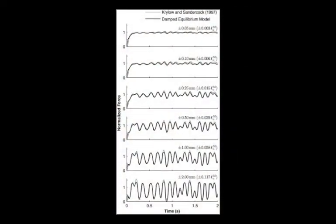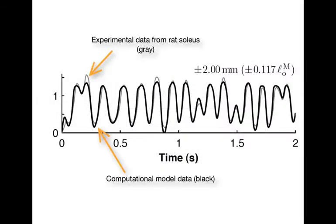So, for example, in the plot, you can see six plots, and in gray, you see a bunch of squiggly lines. These are the force profiles that were traced out by a rat soleus muscle that was maximally excited, so it's turned on as much as it can be, and then it's stretched. And Krylo and Sander-Clark recorded the forces that this muscle developed.